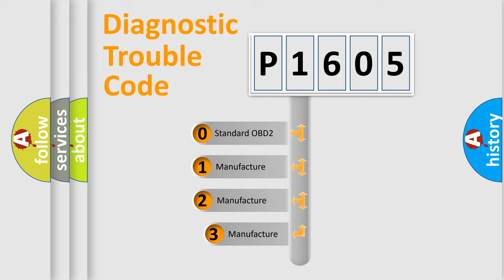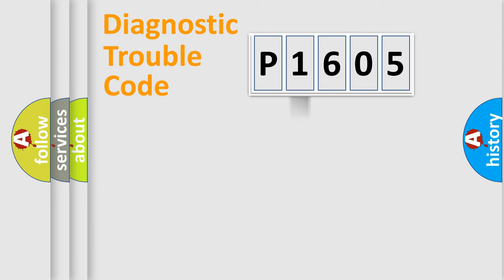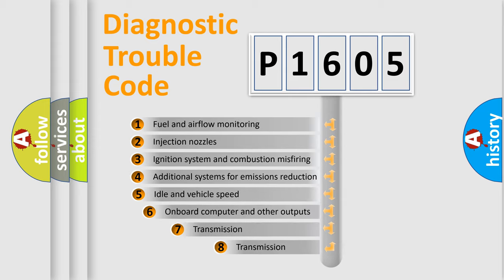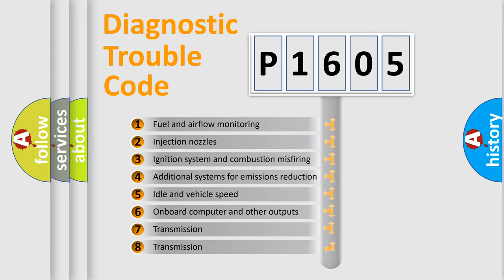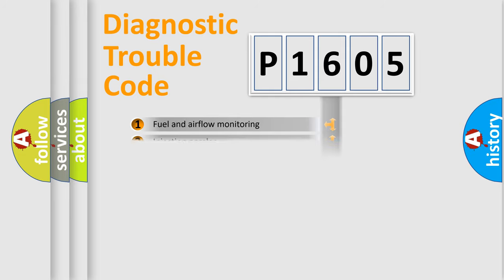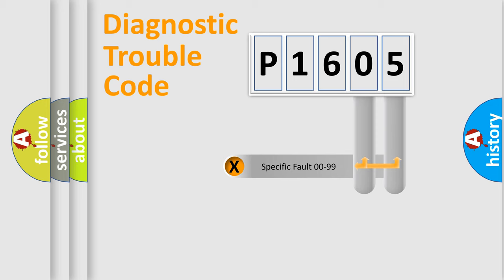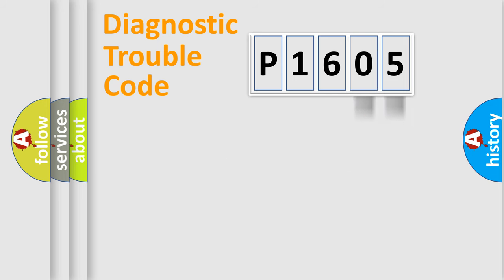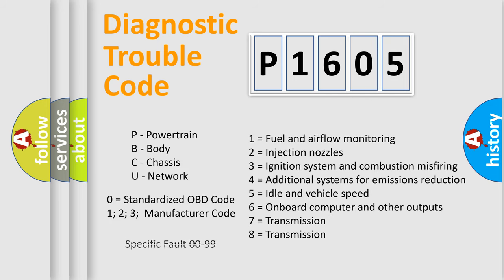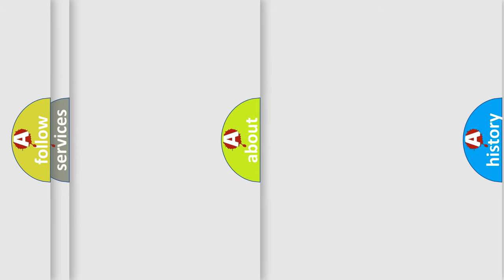If the second character is expressed as zero, it is a standardized error. In the case of numbers 1, 2, or 3, it is a more manufacturer-specific expression of the car-specific error. The third character specifies a subset of errors. This distribution is valid only for the standardized DTC code, and only the last two characters define the specific fault of the group. Such a division is valid only if the second character code is expressed by the number zero.